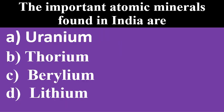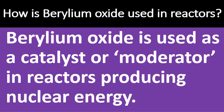The important atomic minerals found in India are uranium, thorium, beryllium and lithium. How is beryllium oxide used in reactors? Beryllium oxide is used as a catalyst or moderator in reactors producing nuclear energy.